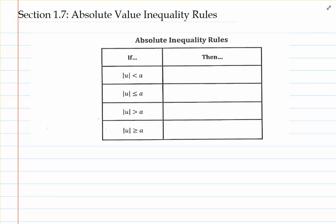To say that the absolute value of u is less than a really means an AND compound inequality. If we have the absolute value of u is less than a, here's what this really means about the expression u: u is going to be less than a, but at the same time, negative a is going to be less than u. So this type of absolute value inequality breaks up into a compound inequality — in particular, the AND compound inequality.